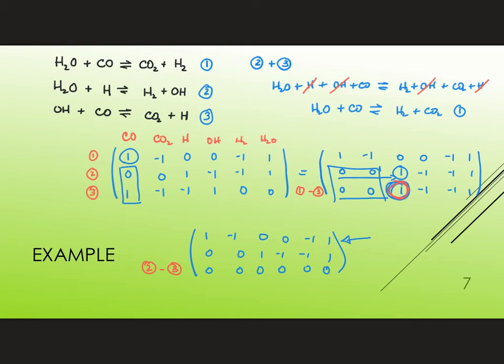The rank is counting the rows that have entries once I get it into this triangular form. If they are all zero it doesn't count. So therefore the rank is 2, there are two independent reactions. Thank you very much for your time.